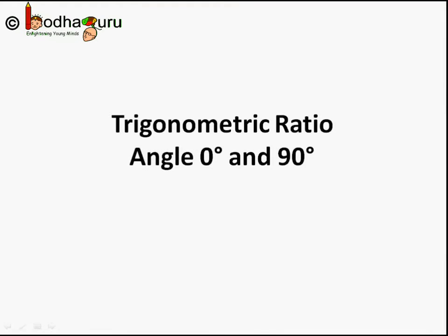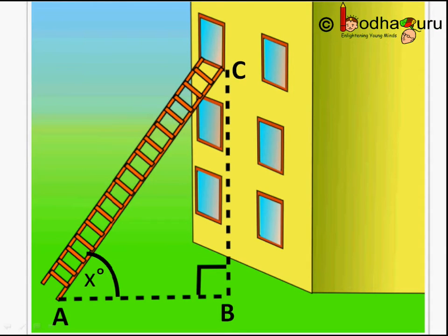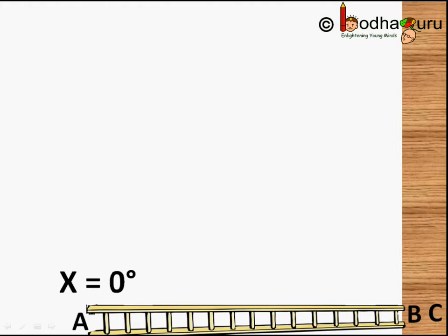Hello friends! In our previous videos we learned about trigonometric ratios for different angles: 30, 45, and 60 degrees. Let us learn how to find trigonometric ratios for angles 0 and 90 degrees. Let's take the same example — we have a ladder resting on a wall. It makes an angle x degrees with the ground, so we have a right angle triangle ABC where angle B is the right angle and angle A is x degrees.